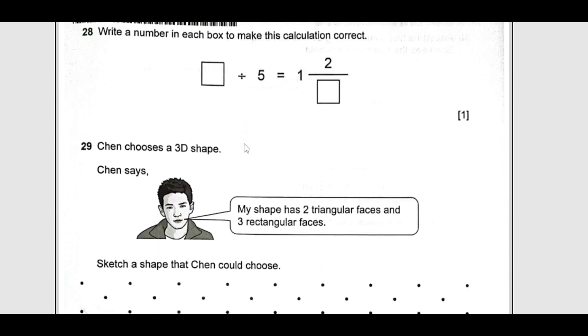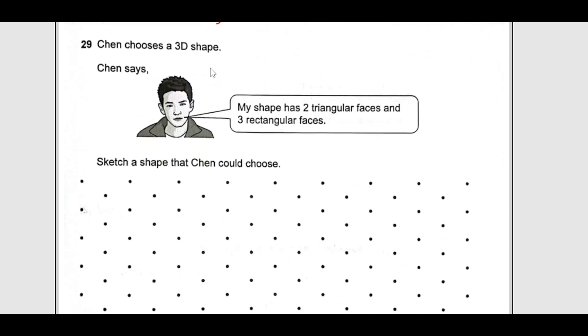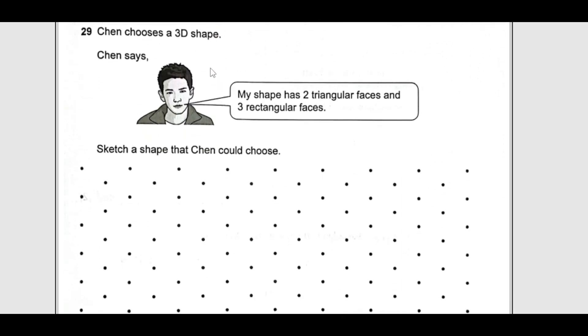Write a number in each box to make the calculation correct. Something divided by 5, so that means here it will be 5. Denominator 5 times 1 is 5 plus 2 equals 7. So it should be 7 here.